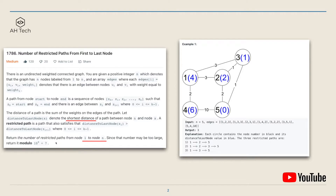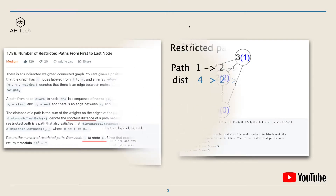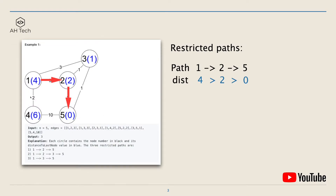The question statement is a bit confusing, so let's take a closer look at example 1. We have five nodes; the black number in the circle is the node number, the number on the edge is the edge weight, and the blue number in the circle is the shortest weighted distance from that node to the last node. For example, the shortest distance from node 1 to node 5 is 4, and from node 4 to node 5 is 6, which is 2 plus 3 plus 1.